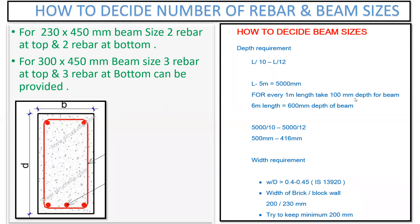Sometimes you have a restriction — you cannot give more than three bars in the first layer, but the area requirement of steel is more. In that case, we try to give rebars in a second layer as well. Whenever you give a rebar in a second layer, we need to maintain a certain distance between the first and second layer. We'll give a pin reinforcement or a spacer rebar, and over that we place the second-layer rebar.